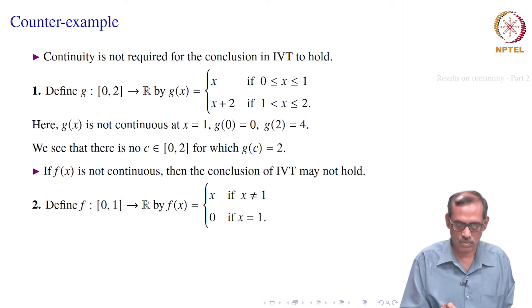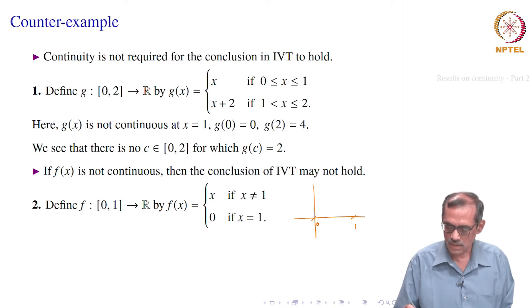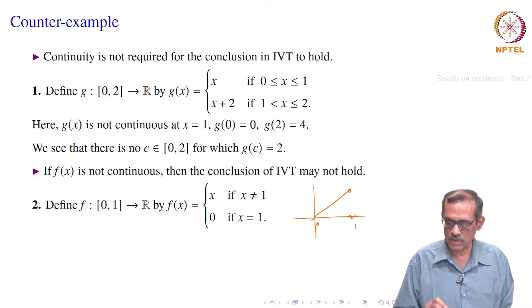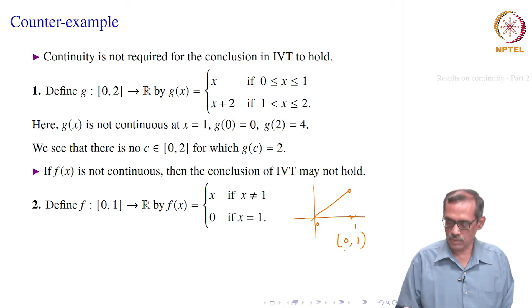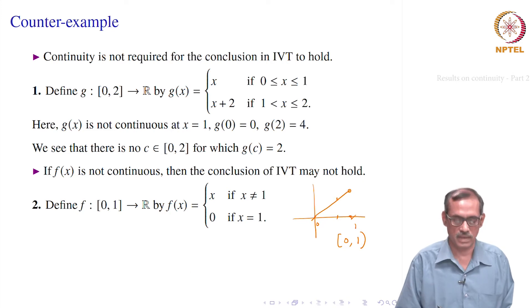For example, define f on [0,1] to ℝ by f(x) = x if x ≠ 1, and f(1) = 0. It is defined from 0 to 1, it is x up to this point, but this point at 1 is excluded; at 1 it is really 0. So it is not continuous at 1. It assumes values from 0 to 1 (range is [0,1) open). Given any value in this range, there is a point c such that f(c) equals that value. So the conclusion of the Intermediate Value Theorem holds, however the function is not continuous.